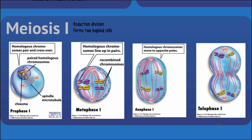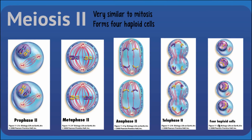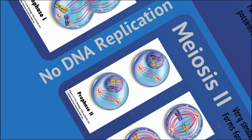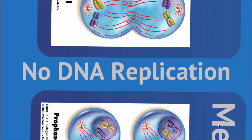Finishing up meiosis one, at the end going through telophase one, we have haploid cells because each daughter cell will have one copy of each chromosome. But these are duplicated chromosomes made up of two chromatids, so we still need another round of division to separate those sister chromatids. That is what happens in meiosis two. Meiosis two immediately follows meiosis one, and this process is very similar to mitosis — pretty much all the same events. The DNA is already duplicated, so there is no DNA replication between meiosis one and meiosis two.